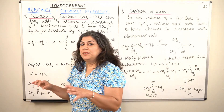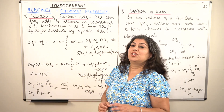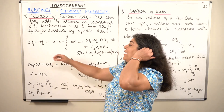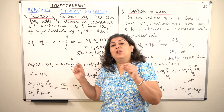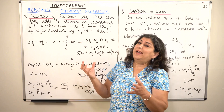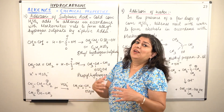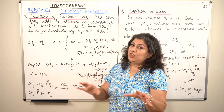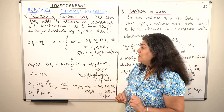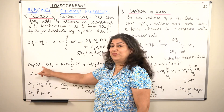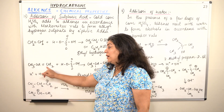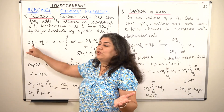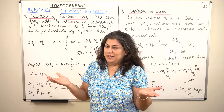If you had an unsymmetrical alkene, you can observe the Markovnikov addition, because according to Markovnikov's rule when you have an unsymmetrical alkene, the addition of the addendum displays Markovnikov's rule. If we take the same addition in the case of propene, which is an unsymmetrical alkene — because on one side of the double bond you have one carbon and on the other side you have two carbons — it is not symmetrical.